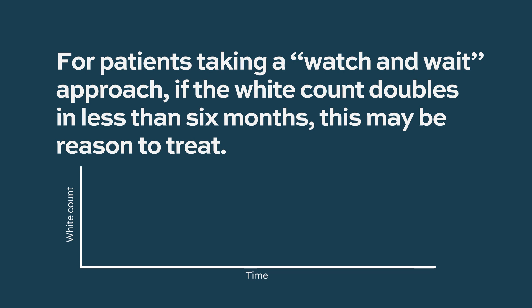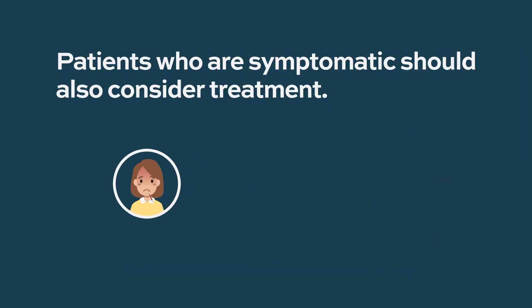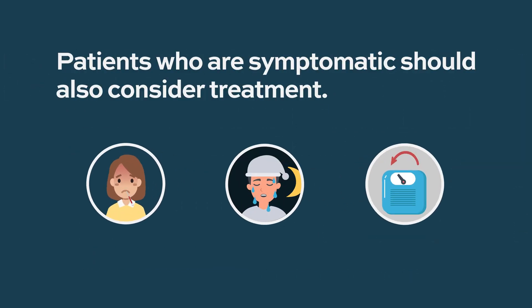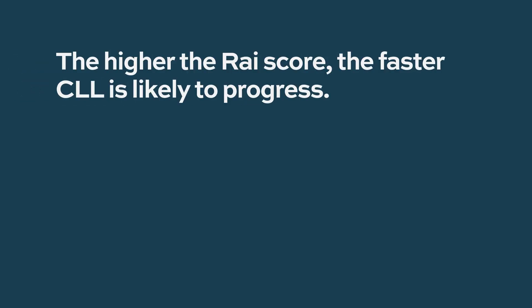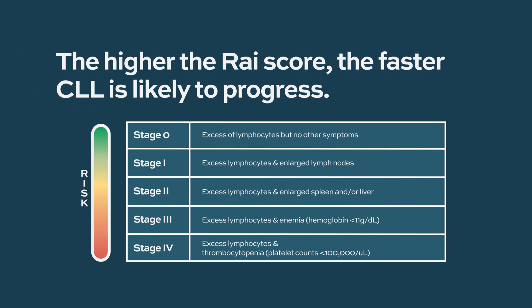Also, if you're under a watch-and-wait approach and your white count is doubling in less than six months, that would be a reason to treat. Patients who are symptomatic with fevers, night sweats, weight loss, or any other symptoms would also be worthy of considering treatment. The staging system is prognostic — patients who have higher stages have a shorter time to progression and a more limited lifespan.